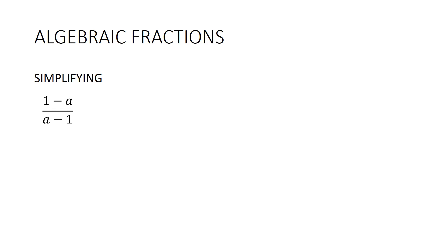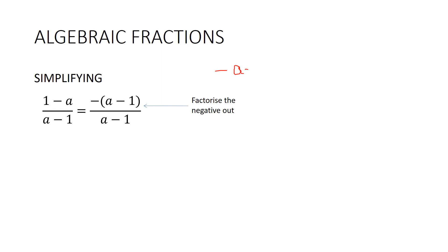This is a very interesting one worth learning: (1−a) over (a−1) simplifies to negative 1. Here's the trick — factorise the negative out of the top. Rewrite 1−a as −a+1, then take the negative out, changing all the signs inside the brackets to get −(a−1). Now the top and bottom are the same thing — (a−1) into (a−1) goes one time — so our answer is negative 1.